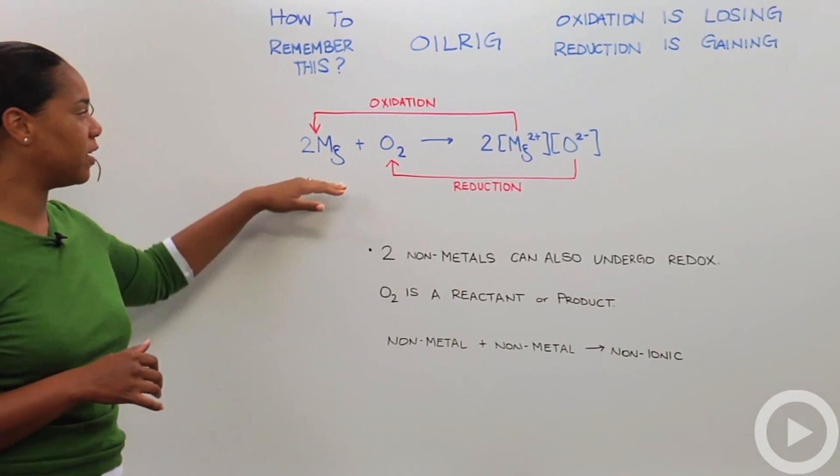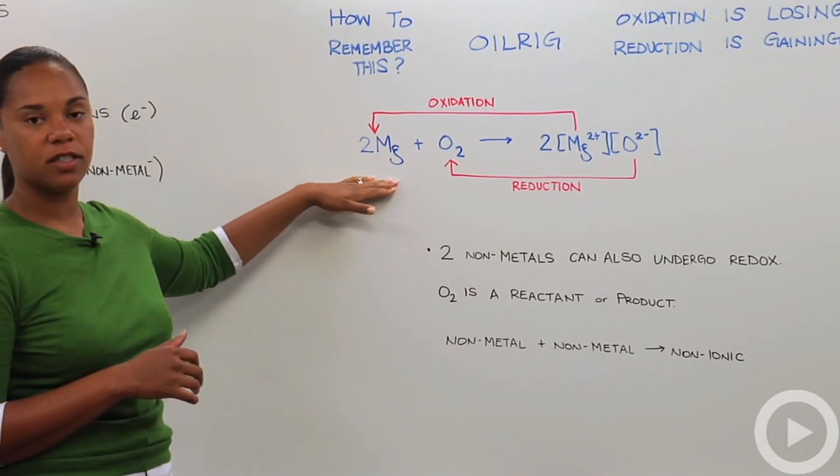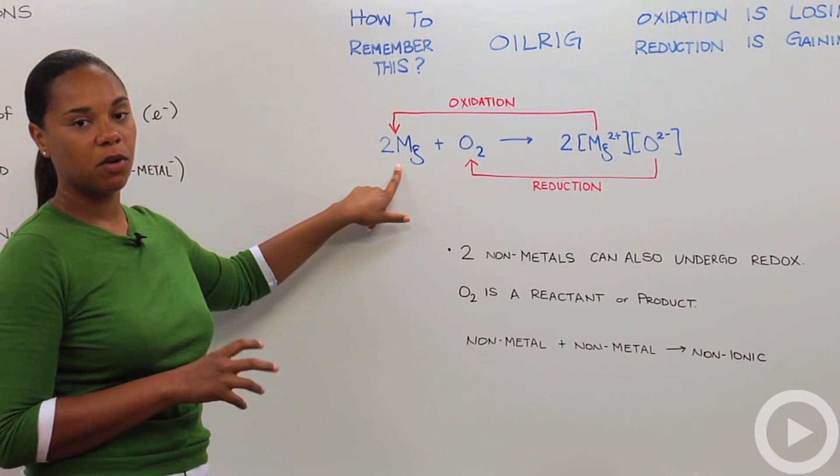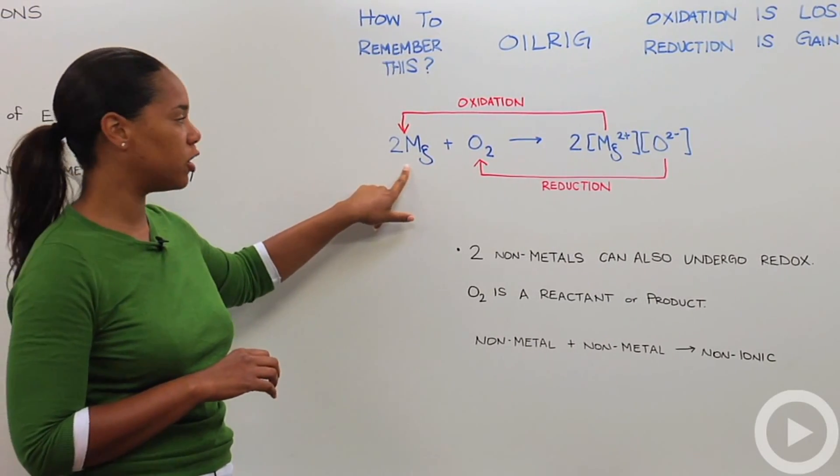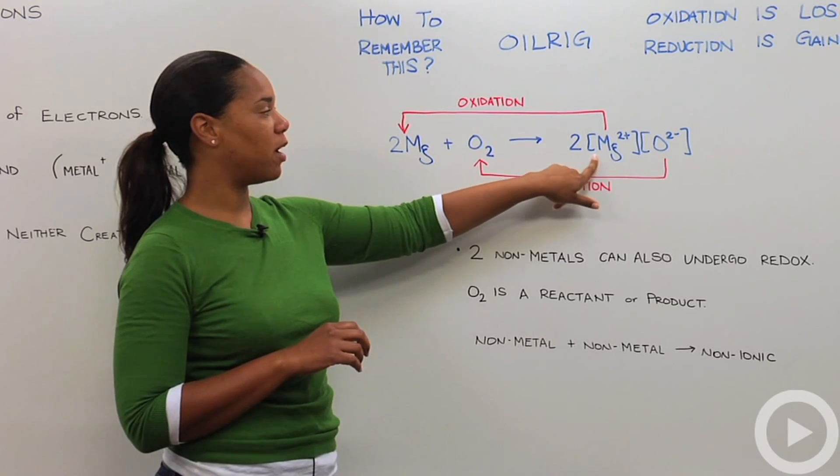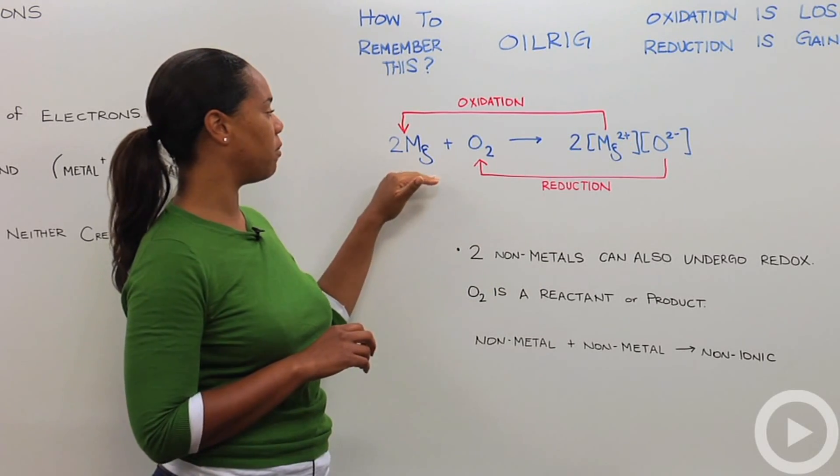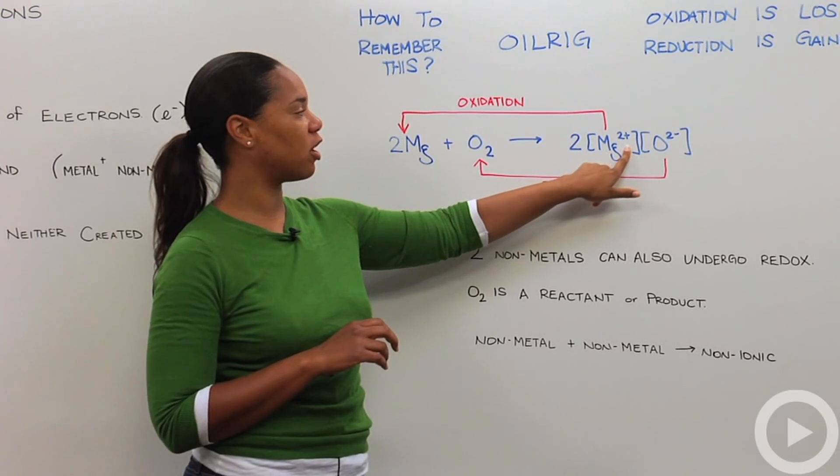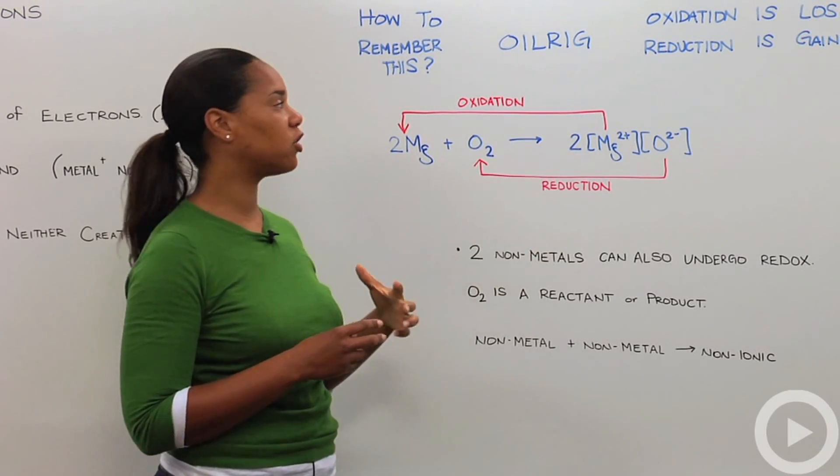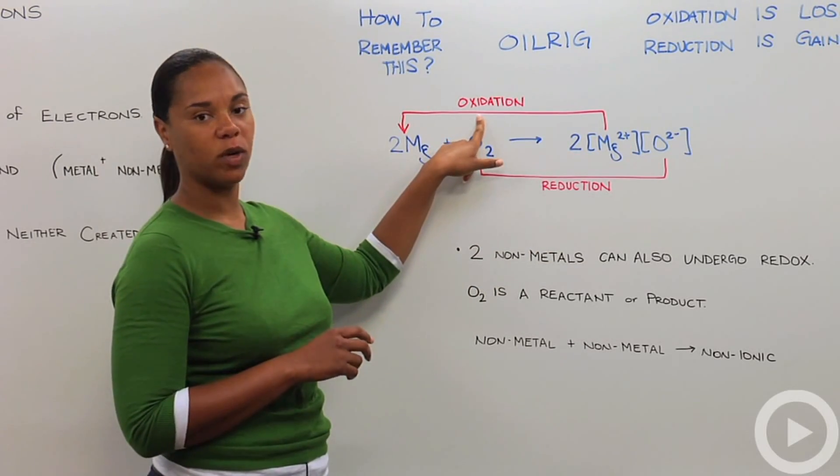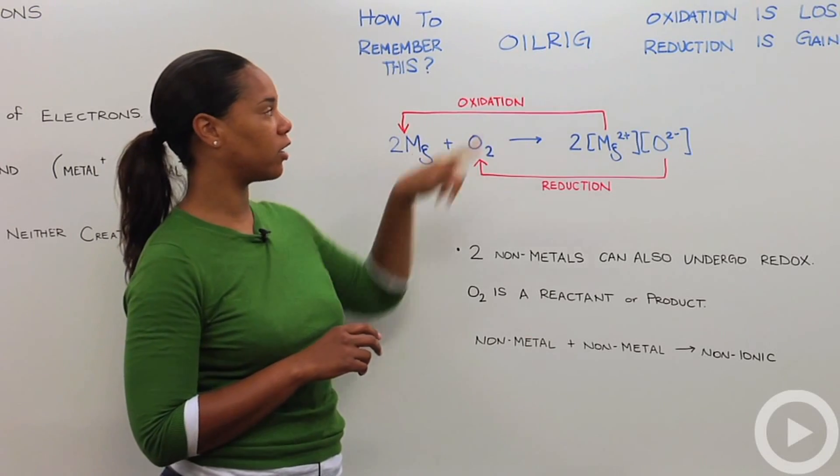So here's a very simple reaction to illustrate this point. So here we have magnesium, which has an overall zero charge. And it goes to form magnesium two plus. So that means that in order to go from a zero charge to a two plus charge, we must have lost two electrons. So that means magnesium was oxidized, it lost electrons.